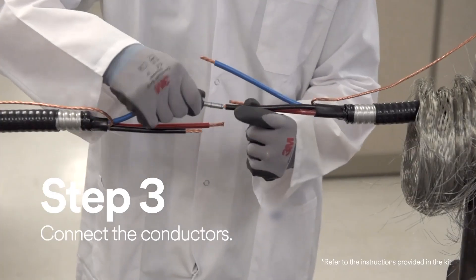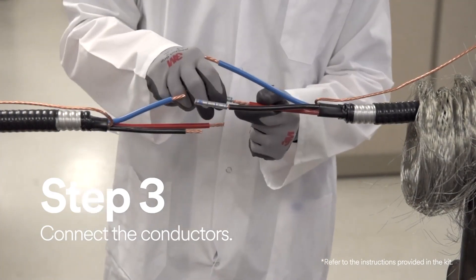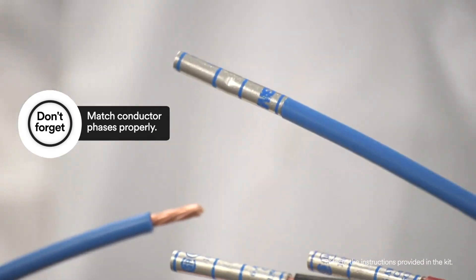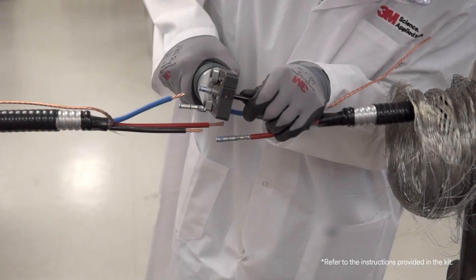Now it's time to connect the conductors. To connect the conductors, you have to first match conductor phases properly and place either insulated or non-insulated connectors and crimp them with the proper tool.